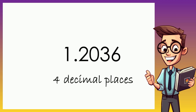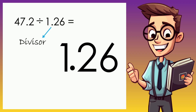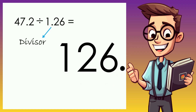So 0.56 has 2 decimal places and 1.2036 has 4 decimal places. Here's a very important rule in dividing decimals: you can only divide decimals if your divisor is a whole number. In this example our divisor is 1.26 — it is not a whole number, so what we need to do is move the decimal point to the right until it becomes a whole number.